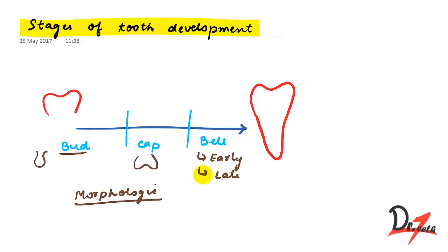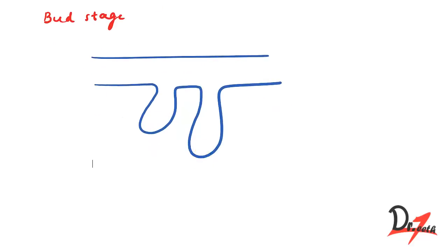Now let's start with the bud stage first. So in the last video we have studied how the dental lamina and the vestibular lamina forms. This was our oral ectoderm, and this was the dental lamina, and this was the vestibular lamina. So vestibular forms the vestibule and dental lamina forms the tooth. Below this we have something which is called the ectomesenchyme, or you can say the connective tissue.